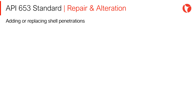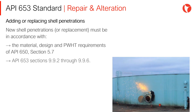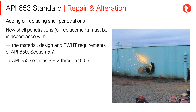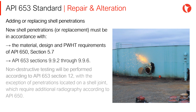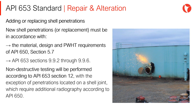Adding or replacing shell penetrations: new shell penetrations, or replacements, must be in accordance with the material design and post-weld heat treatment requirements of API 650 sections 5–7, and also with API 653 standard sections 9.9.2 through 9.9.6. Non-destructive testing will be performed according to API 653 section 12, with the exception of penetrations located on a shell joint, which require additional radiography according to the API 650 standard.